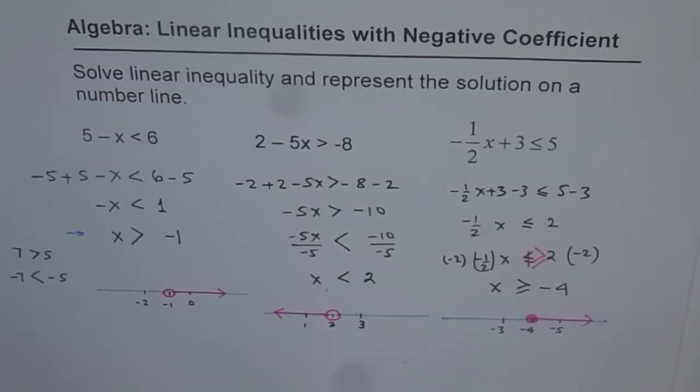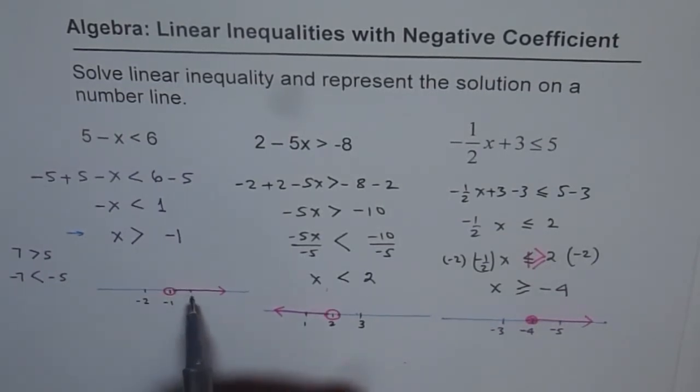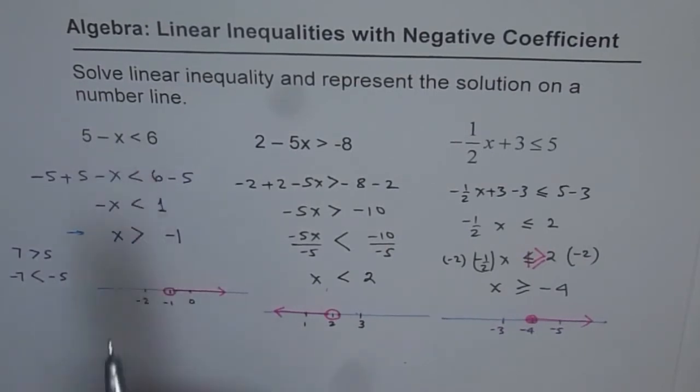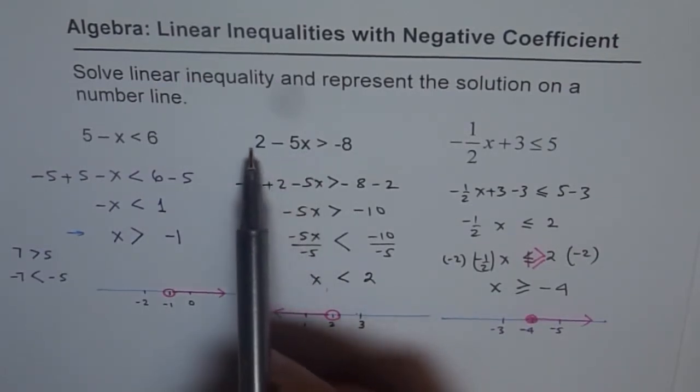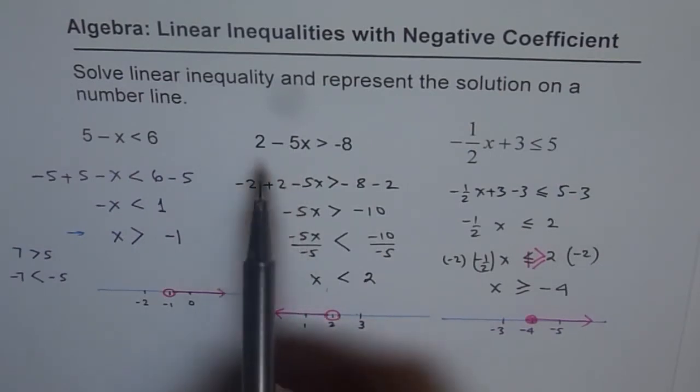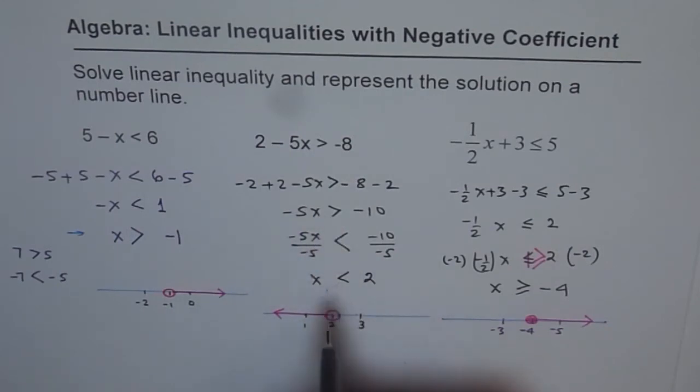So once you have done the solution, what you should do is, you should check your solution. 0 is a good point to check in this case. So if you plug in 0 here, you get 5 less than 6. That is correct. In this case, 1 is a good point to check. So if I substitute 1 for x, I get 2 minus 5, which is minus 3. And minus 3 is greater than minus 8. So that is also correct.